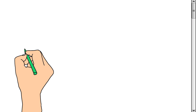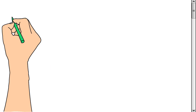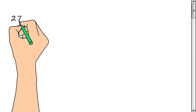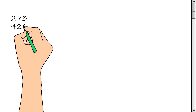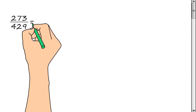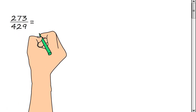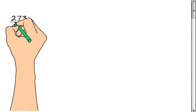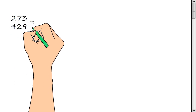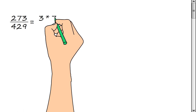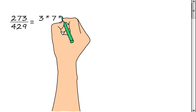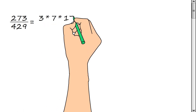We need to reduce the fraction 273/429. We represent the numerator of the fraction as a product of prime factors: 3, multiply by 7, multiply by 13.